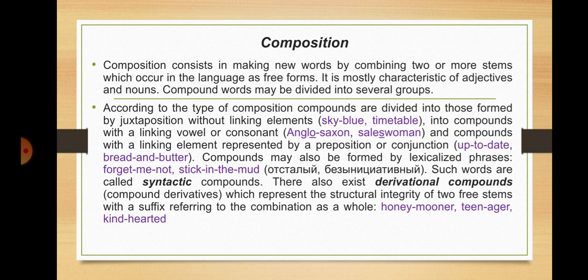The next major way of word building is composition. Composition consists in making new words by combining two or more stems which occur in the language as free forms. It is mostly characteristic of adjectives and nouns. According to the type of composition, compounds are divided into those formed by juxtaposition without linking elements (e.g., 'sky blue', 'timetable'), compounds with a linking vowel or consonant (e.g., 'Anglo-Saxon', 'saleswoman', with linking -o- or -s-), and compounds with a linking element represented by a preposition or conjunction (e.g., 'up-to-date', 'bread and butter'). Compounds may also be formed by lexicalized phrases: 'forget-me-not', 'stick-in-the-mud'. Such words are called syntactic compounds.